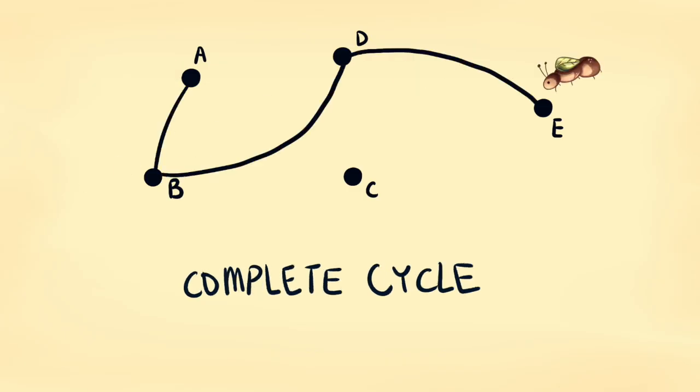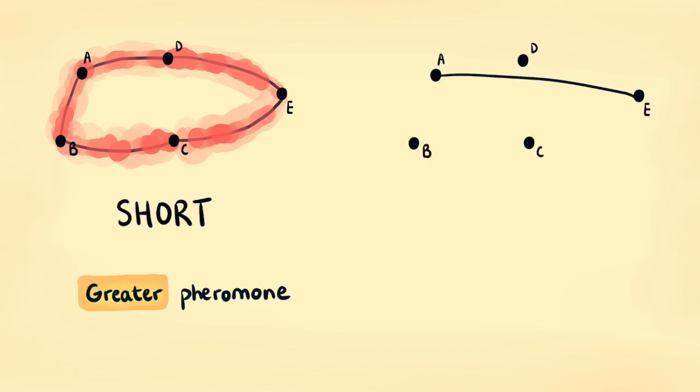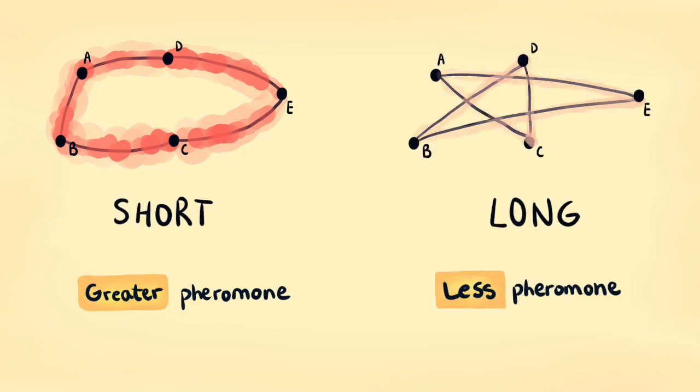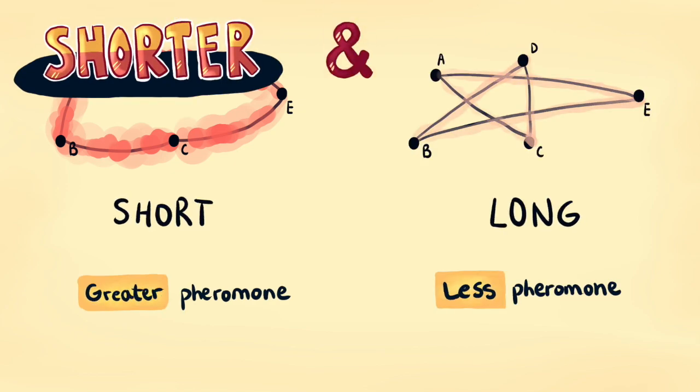When an ant completes a cycle, it leaves some pheromone along the path. Shorter cycles lead larger amounts of pheromones than longer ones. This way, with enough ants, we can guide them to find shorter and shorter cycles.